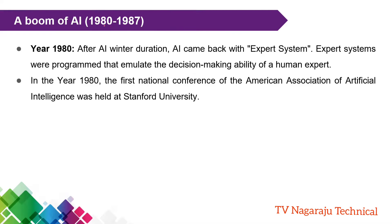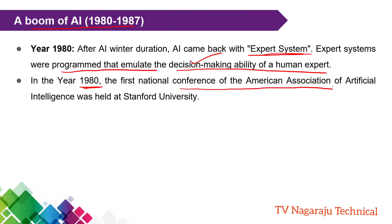After the winter period, AI came back with a boom through expert systems. An expert system is a system programmed to emulate the decision-making ability of a human expert. They prepared an AI that could also make decisions. In the year 1980, the first national conference of the American Association for AI was held, and from this year the booming of artificial intelligence began again.